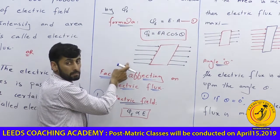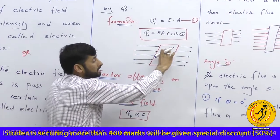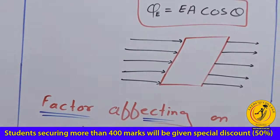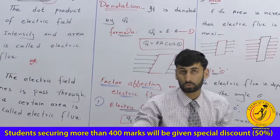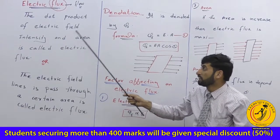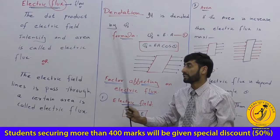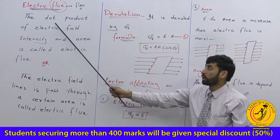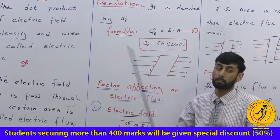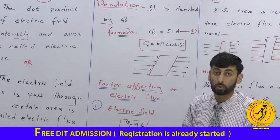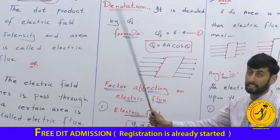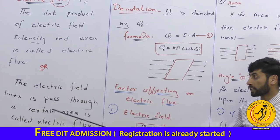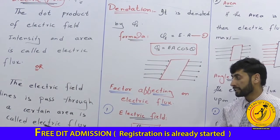Electric field lines will be used in this area to process electric flux. The definition is explained: the dot product of electric field intensity and area is called electric flux. The electric field lines passed through a certain area is called electric flux.